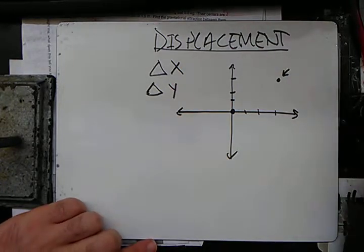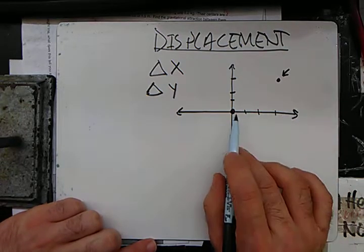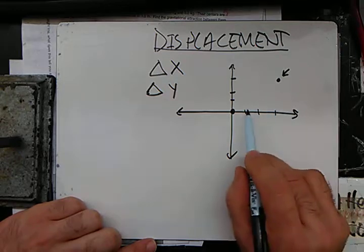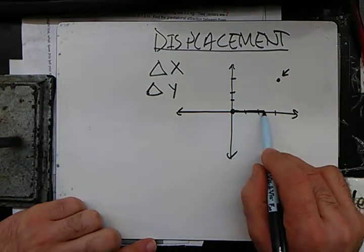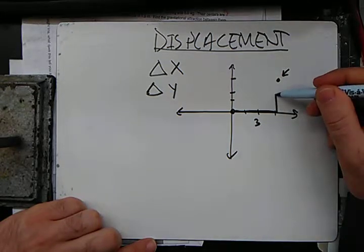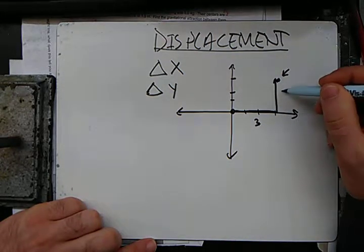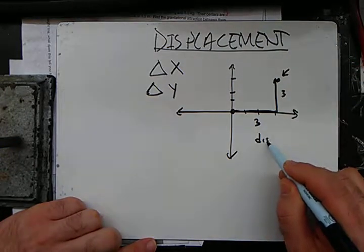So common sense will tell you, if I tell you that if you can only move left and right, you're going to go this way, three units, and you're going to go this way, three units.